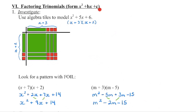In our trinomial, c is the constant term — the one term that does not have a variable of x attached to it. So in this particular one, c is 14. And we can see that this 14 comes by multiplying the last terms together in each of those factors. The same thing here — this c term comes from multiplying the last terms together in each of those brackets.